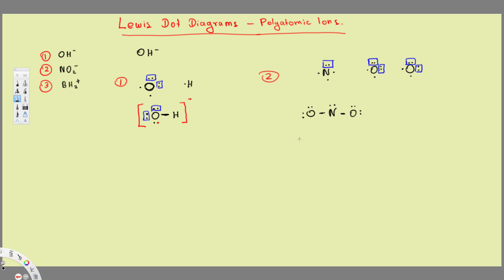Nitrogen already has one lone pair. When you connect each oxygen, one unpaired dot from nitrogen is used per bond. Each oxygen has one dot remaining. I can connect one of those remaining dots with another dot to make a double bond. Let's put all the lone pairs in: one lone pair, two lone pairs, three lone pairs, and another lone pair here.